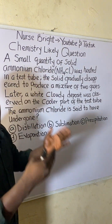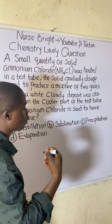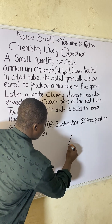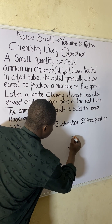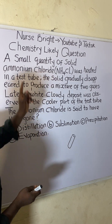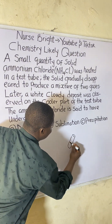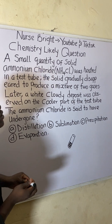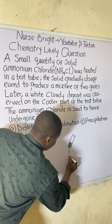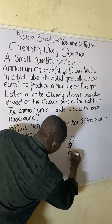Let's illustrate what the question is talking about. Here is a test tube - a small quantity of solid ammonium chloride was heated inside this test tube. A flame was applied to the test tube. So here is the flame heating the test tube.